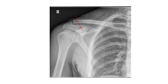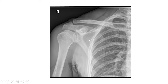This one is the coracoid process of the scapula. This is the acromion process of the scapula, which articulates with the acromial end of the clavicle and forms the acromioclavicular joint, which is a plane variety of synovial joint. This is the total view of the scapula — this is the body of the scapula, and the scapula is an irregular flat bone.